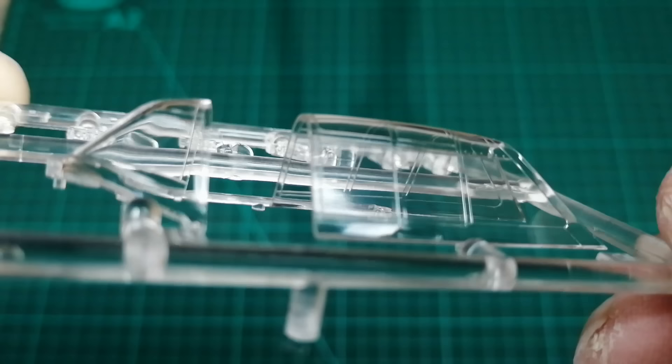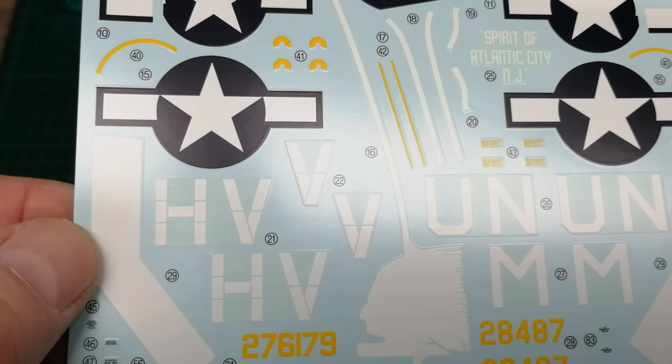Beautiful transparent parts, the decal sheet looks good but it's starting to yellow. So the cockpit first with all parts given the coat of obligatory black.